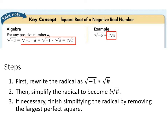To take the square root of a negative number, we take the square root of negative a and rewrite it as the square root of negative 1 times a, then as the square root of negative 1 times the square root of a. Since the square root of negative 1 is i, we rewrite it as i√a. For example, √(-5) becomes i√5. To simplify a negative square root: first rewrite the radical as negative one times the square root of the number, simplify to i√(number), then finish simplifying by removing the largest perfect square factor if necessary.